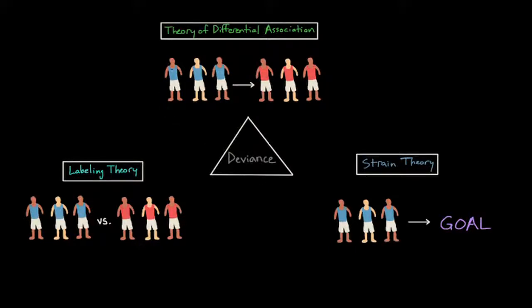One view of deviance from this perspective is a theory of differential association. And differential association states that deviance is a learned behavior that results from continued exposure to others who violate norms and laws. So in this situation, individuals who commit deviant behavior learn values and norms that are different from the dominant culture.